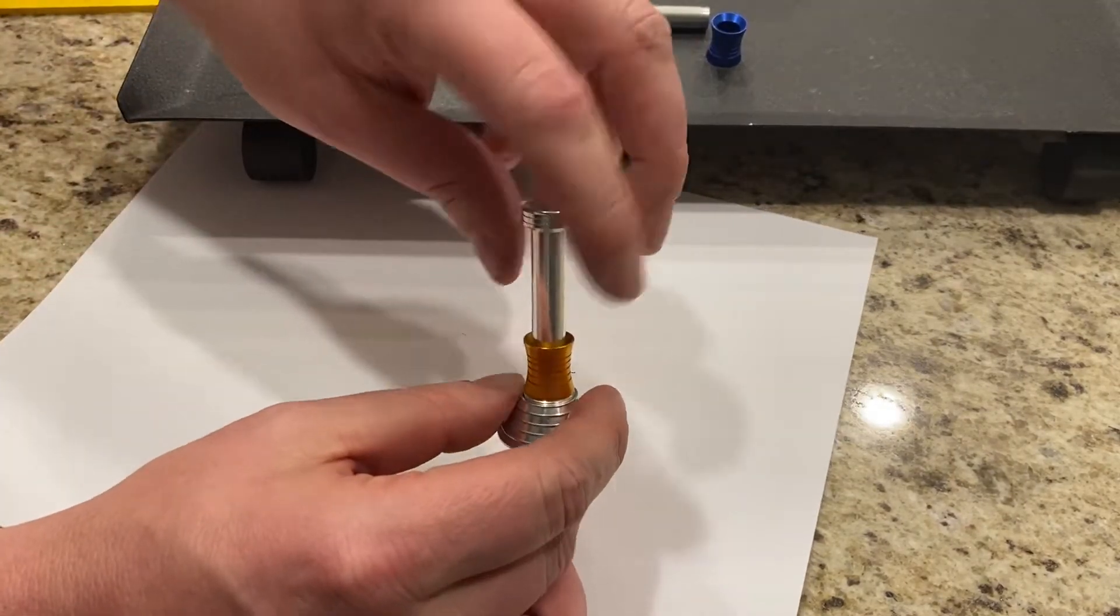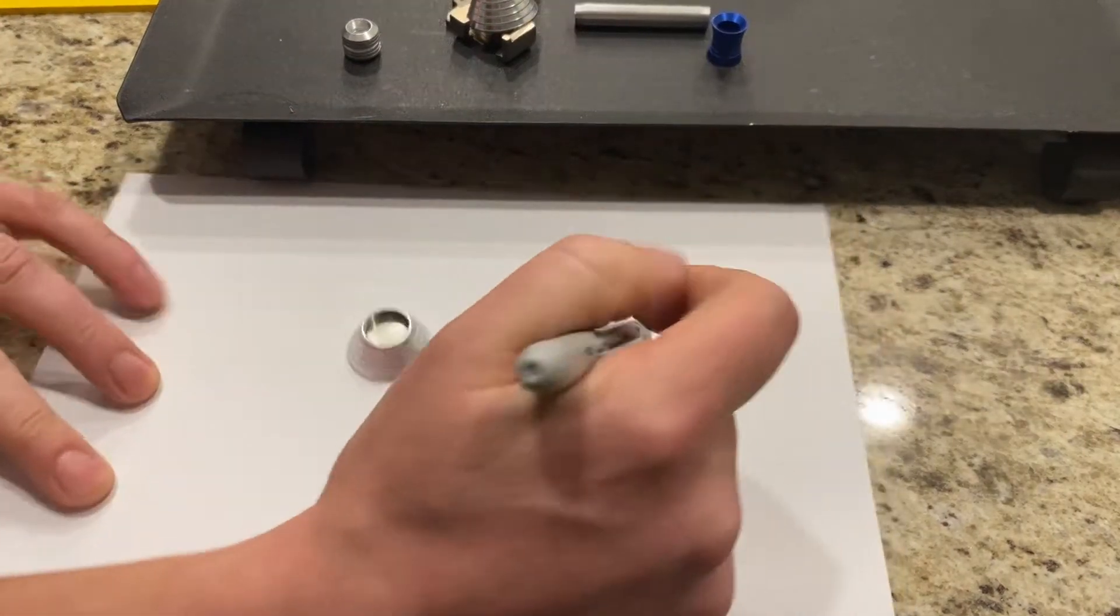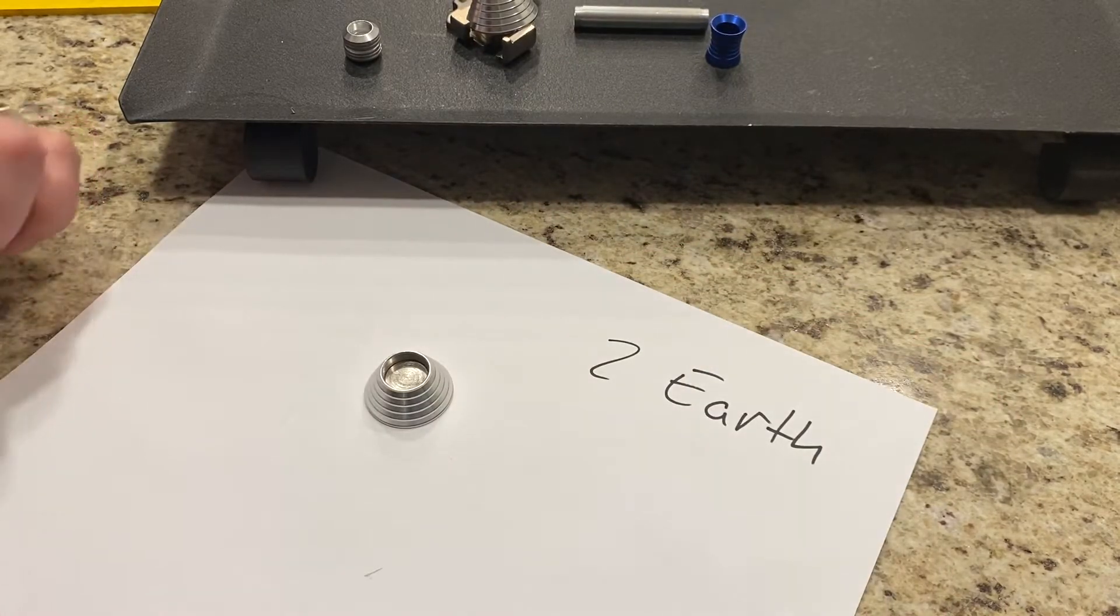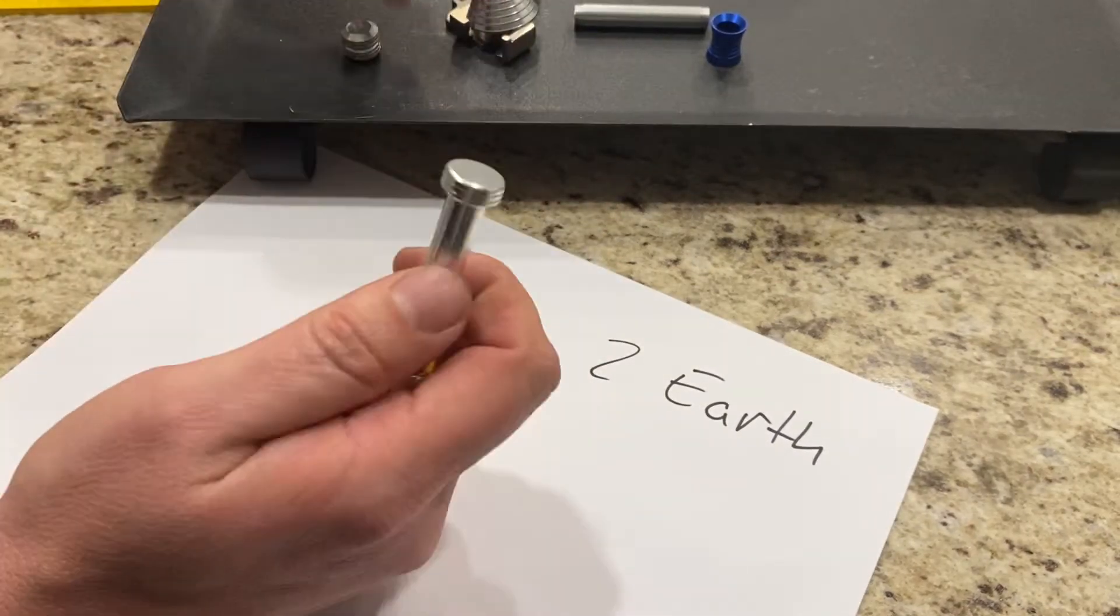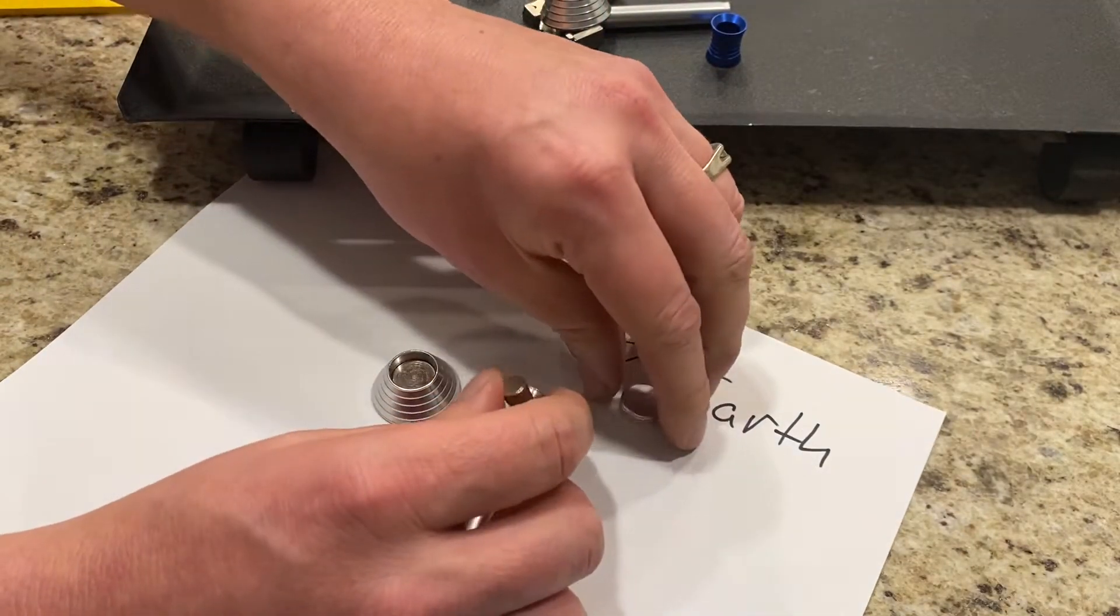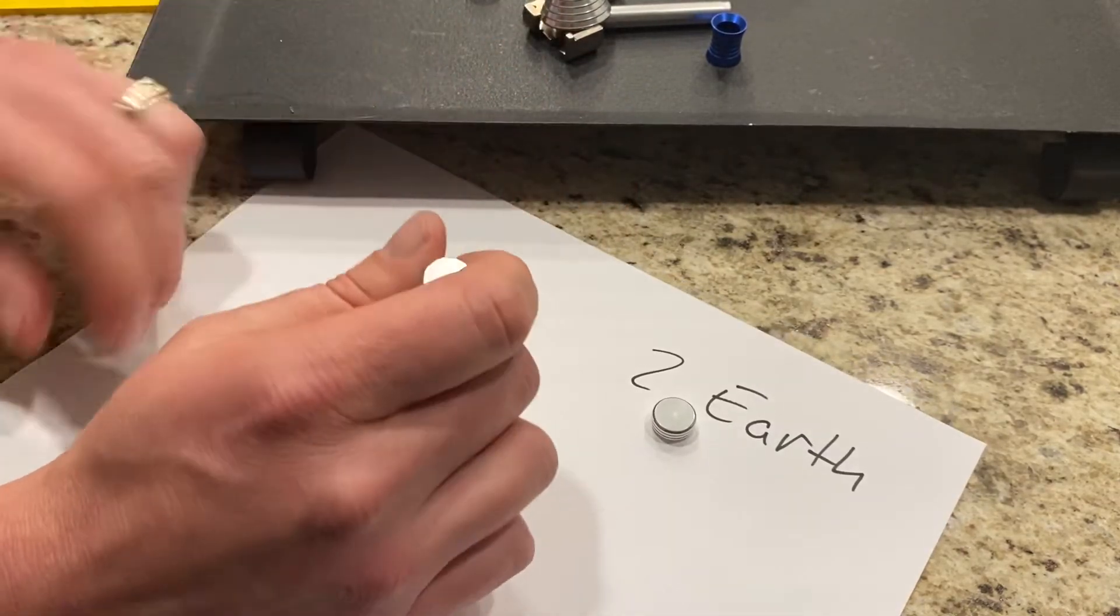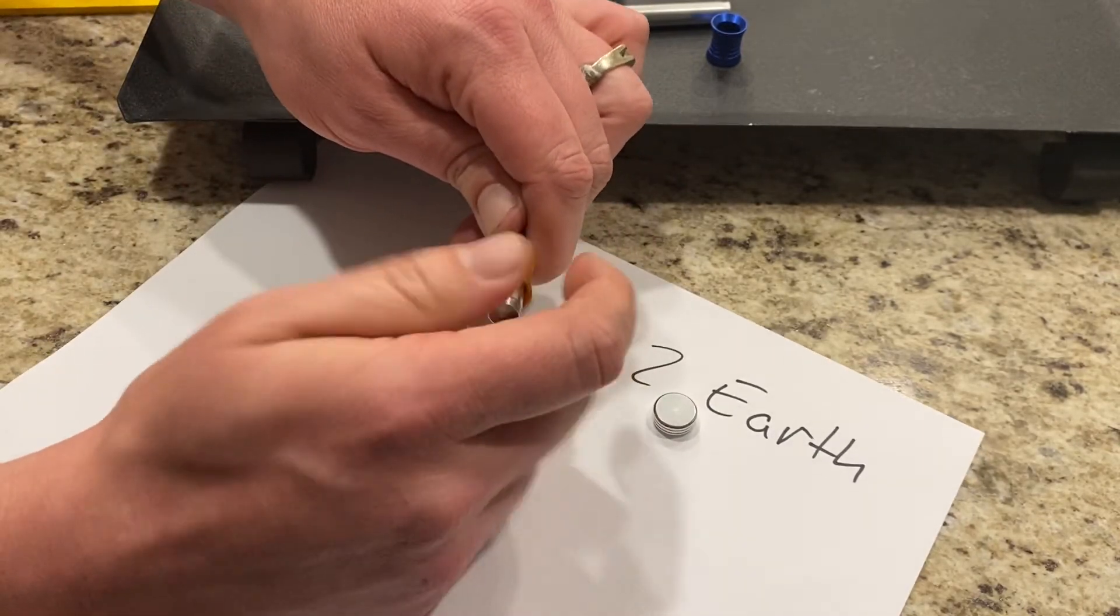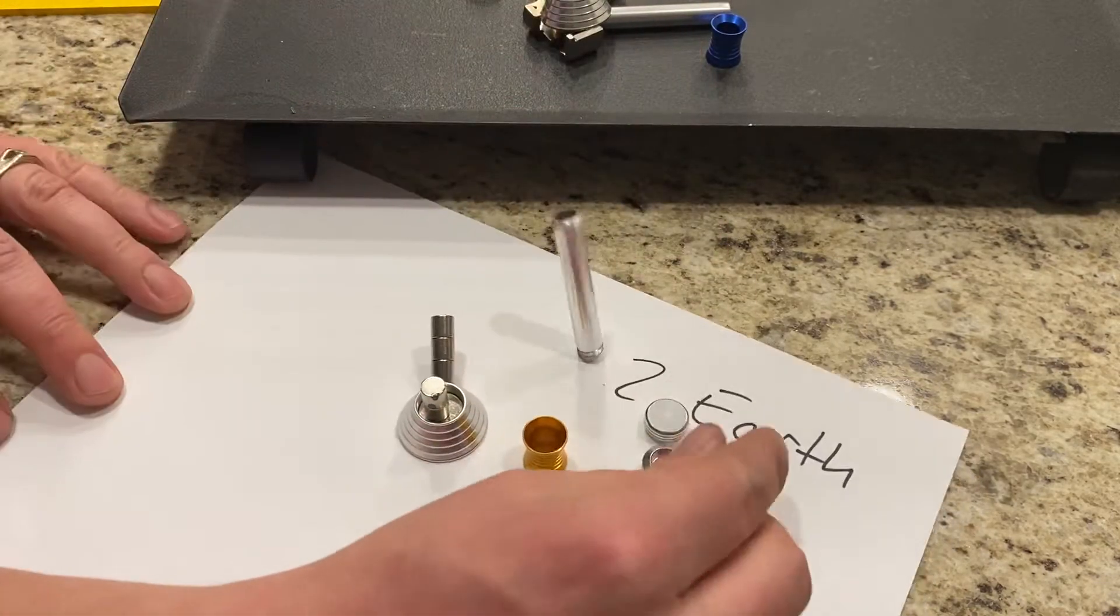For the Mars one, there's a couple more magnets. So I'm going to write down two for blue, the blue for Earth. And I'm going to count up and see how many are in this one that's supposed to represent Mars. So there's three, four, looks like there's one more in there. And so there's five magnets.